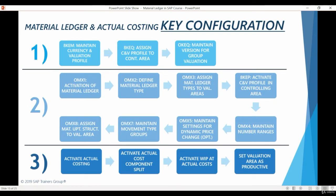Here you can see a summary of the configuration we will be reviewing during this course. I have divided the configuration into three sections. In the first section, we will be examining what settings need to be maintained for currency and valuation profiles and for controlling versions. In the second section, we will be reviewing material ledger's specific configuration and checking how material ledger is linked with valuation areas. In the third section, we will go through how actual costing is activated and how valuation areas are set as productive.